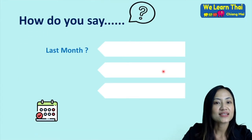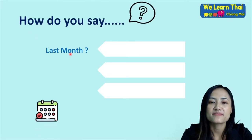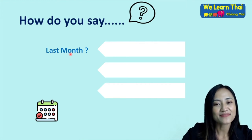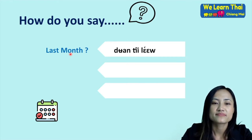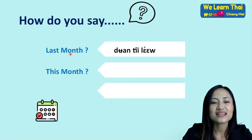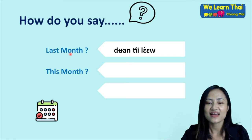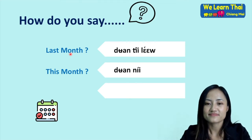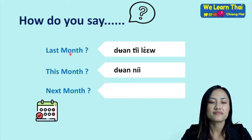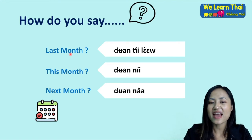How do you say 'last month'? Last month is เดือนที่แล้ว. How do you say 'this month'? This month is เดือนนี้. Next month is เดือนหน้า. Awesome.